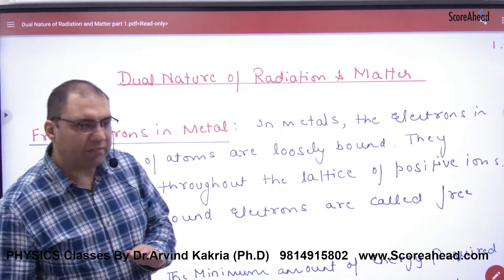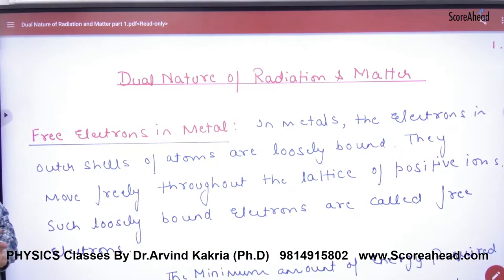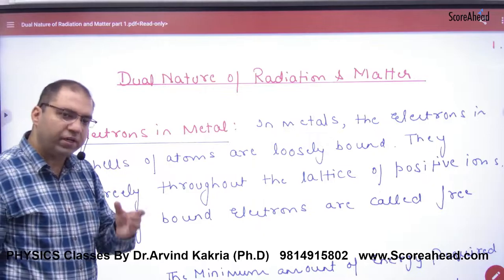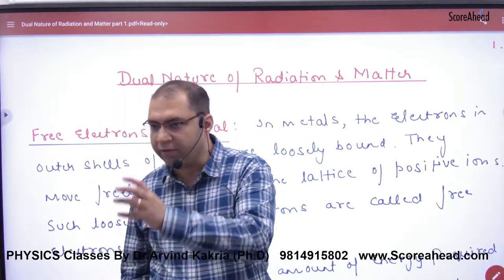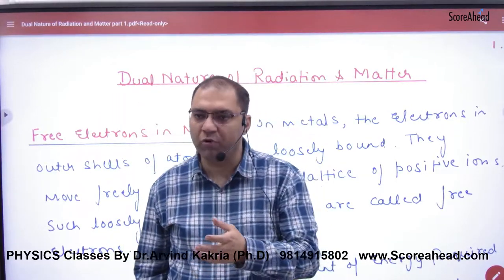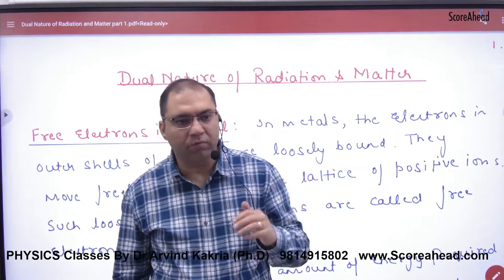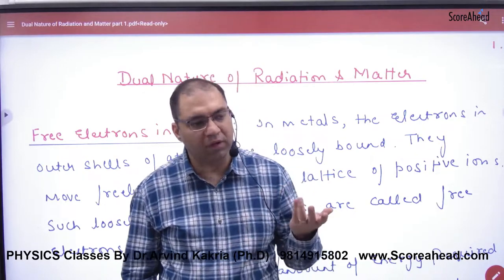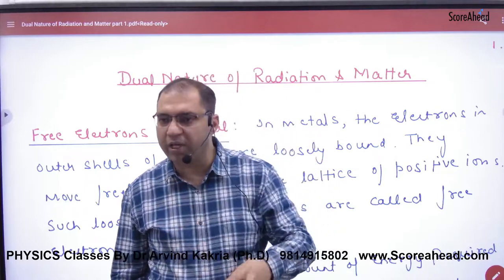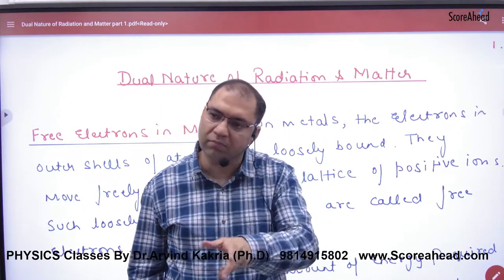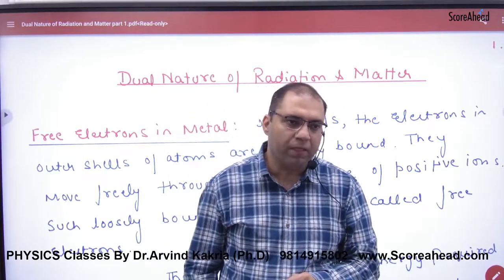Dual Nature of Radiations and Matter. In this topic, the chapter deals with photoelectrons. You have studied about the photoelectric effect. Photons come and fall on photosensitive plates, and electrons come out of them. We call this process the photoelectric effect, and the emitted electrons are photoelectrons. But this story doesn't start here — we have to go into history.